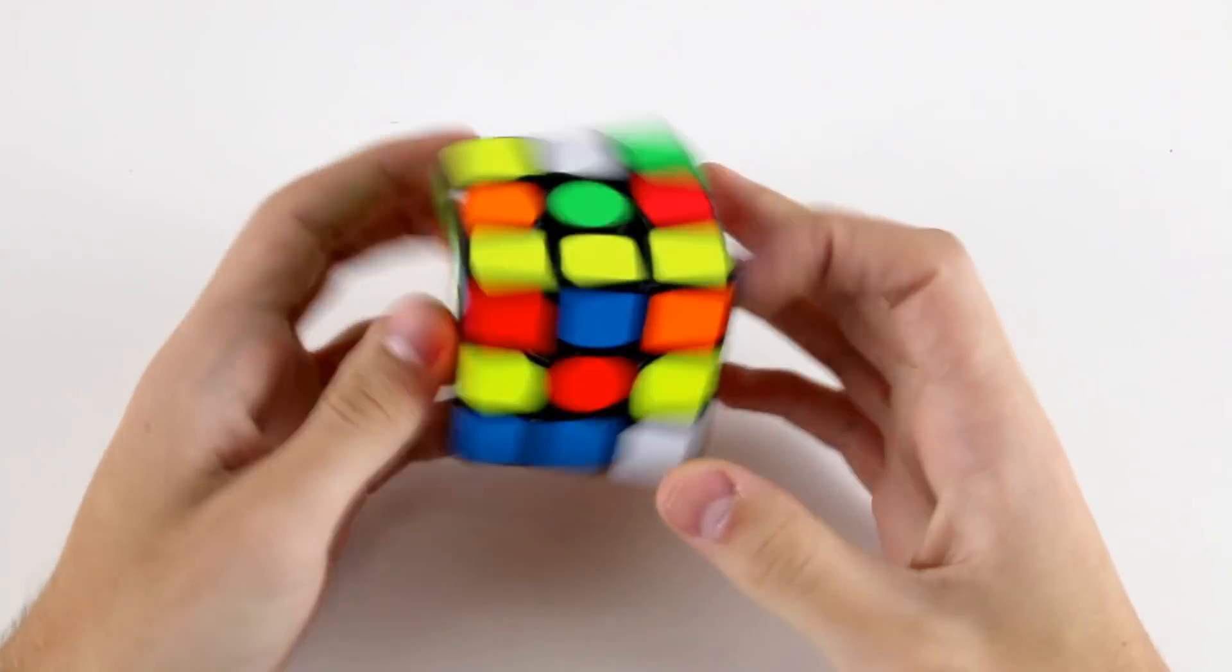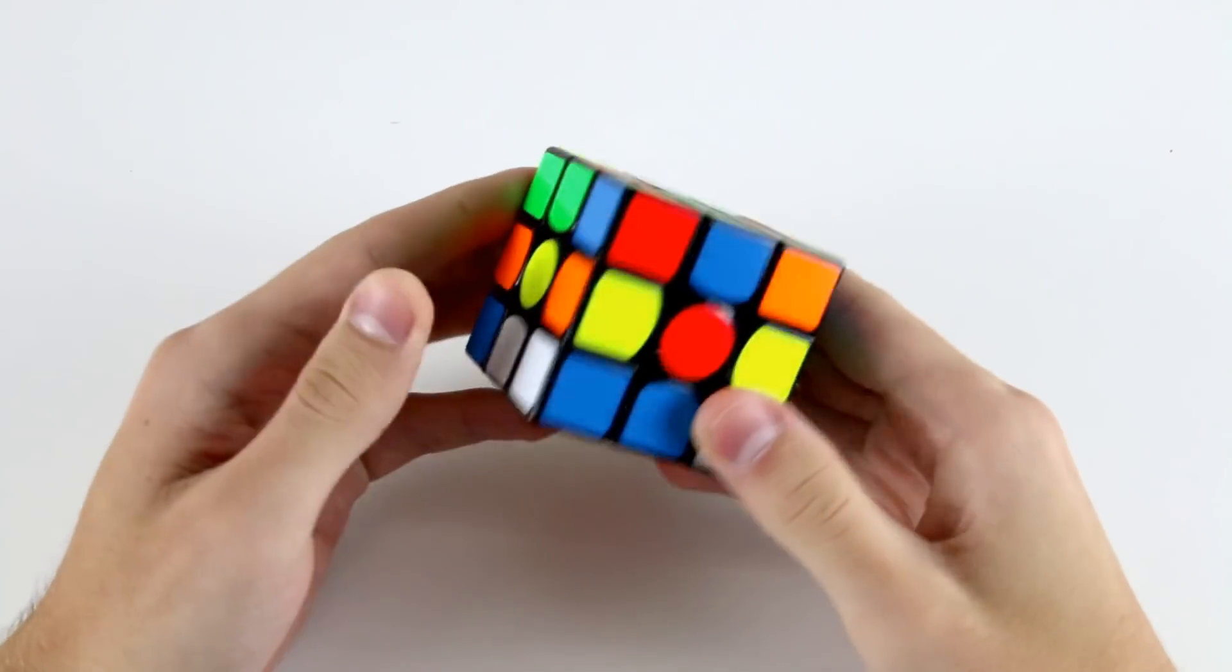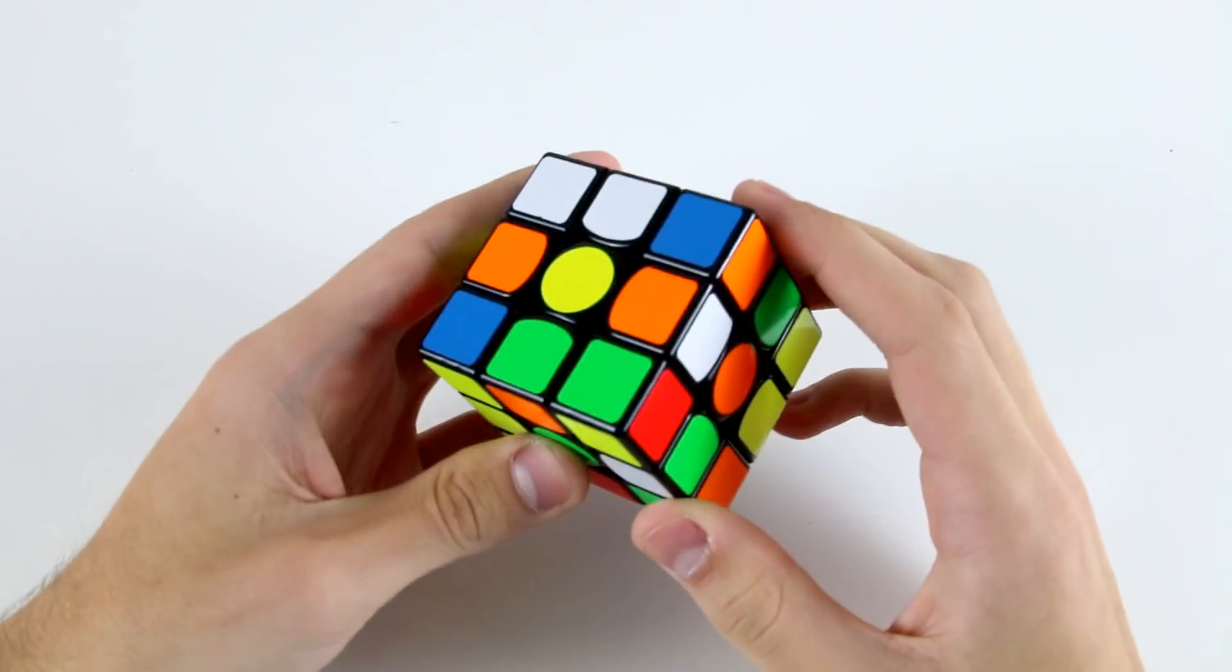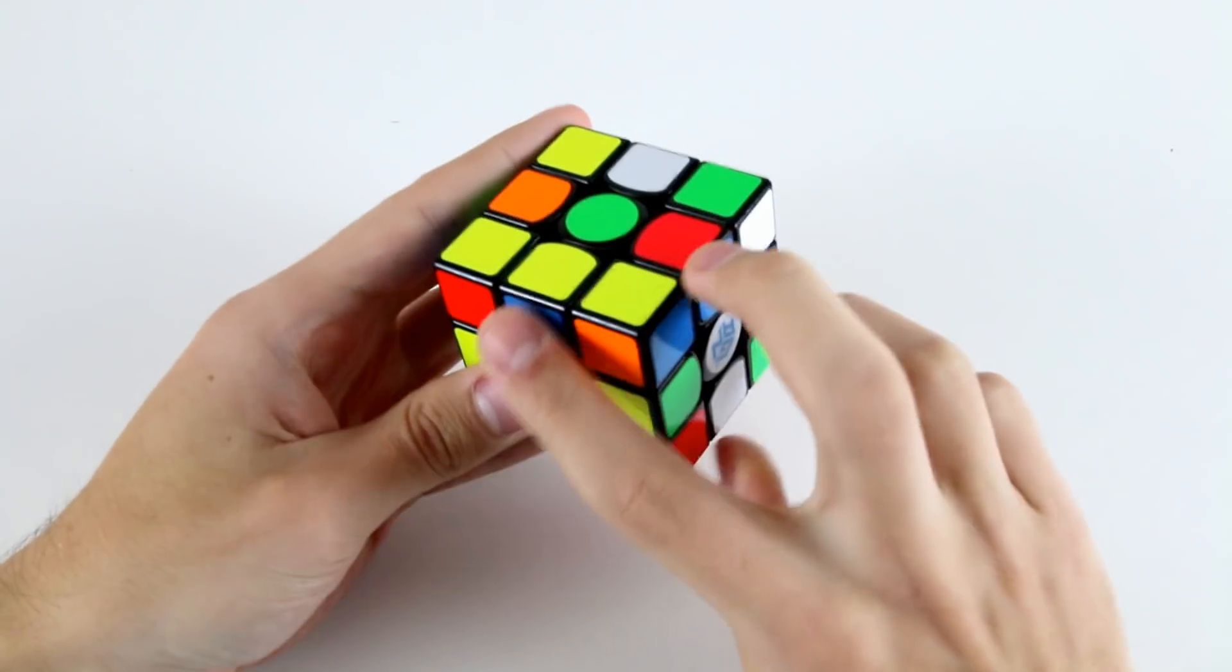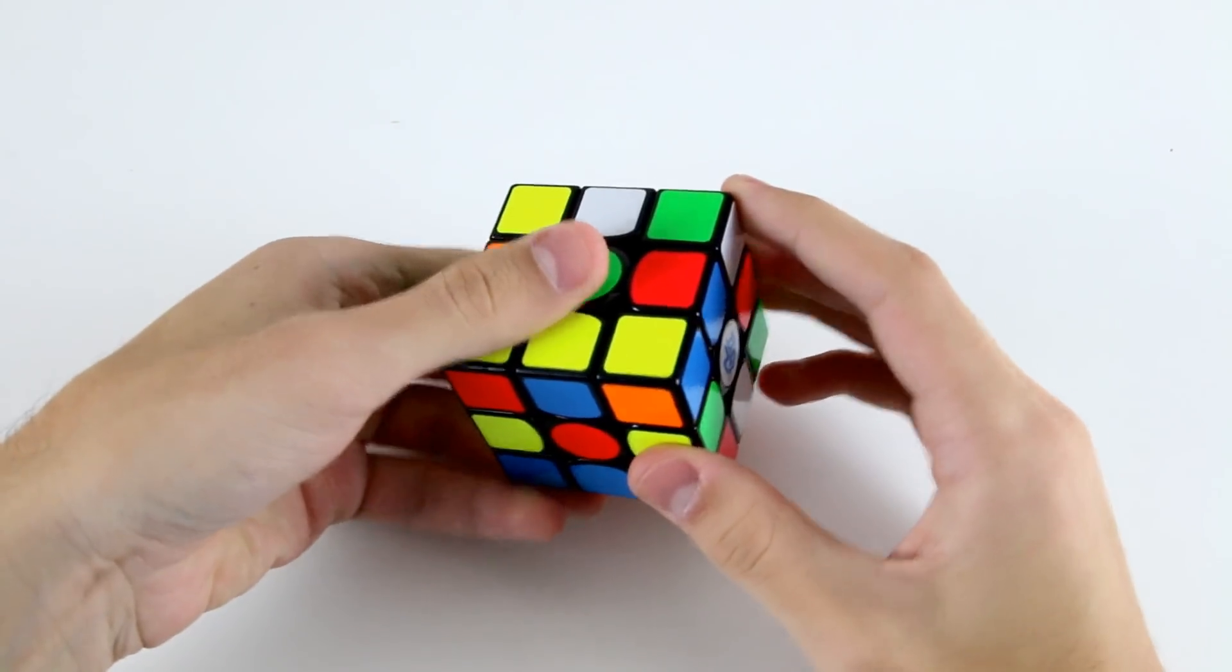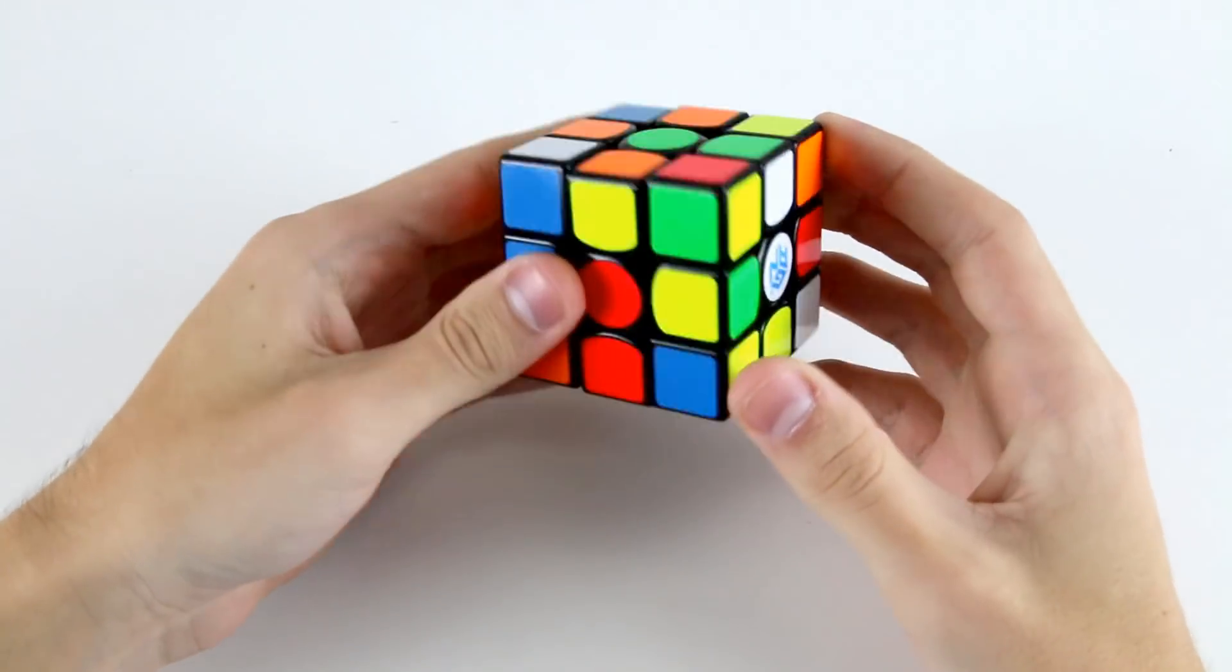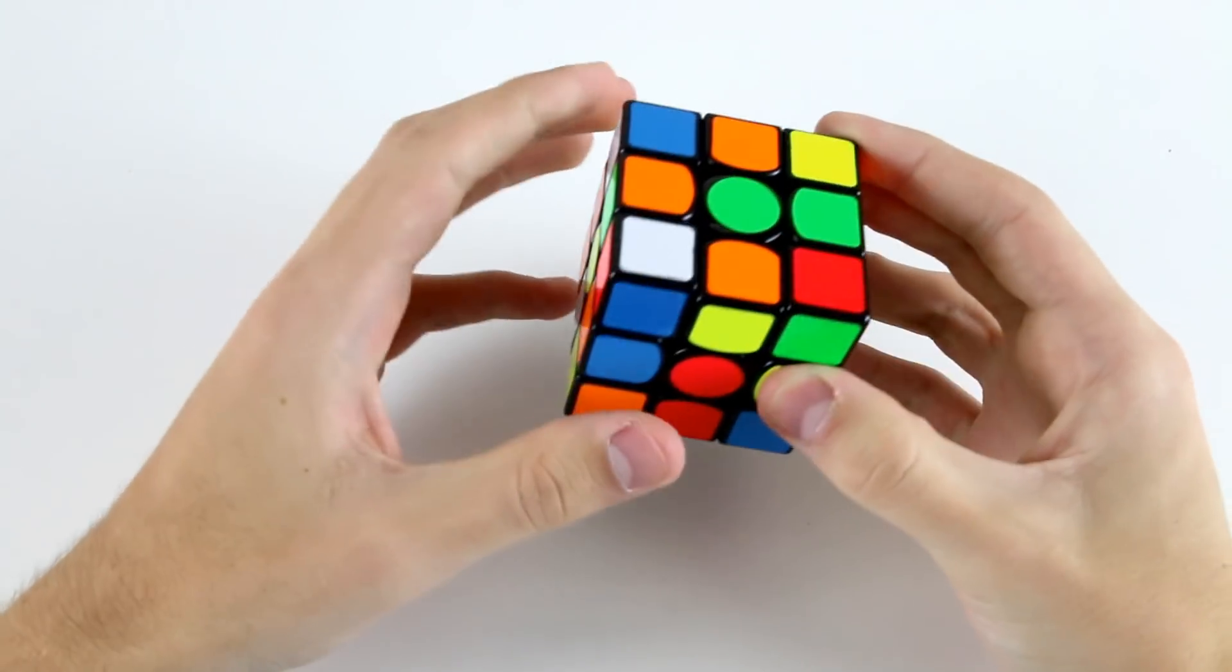This last scramble is a bit tricky, there's not that much on offer. I'd probably go for the blue cross, either that or the white. Let's just go with blue in this case, even though we've got these three which are misoriented. I can do something like wide L, U' D, wide L', and then that gives me these two solved and then I can do the last one by doing D' L D'.